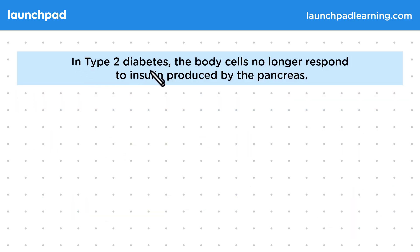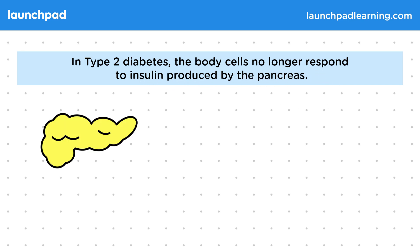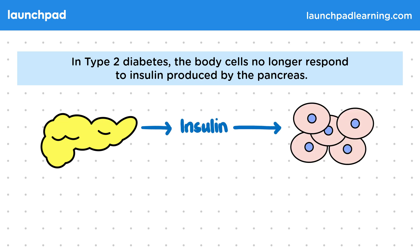In type 2 diabetes, the body cells no longer respond to insulin produced by the pancreas. Unlike type 1 diabetes, the pancreas still produces insulin, but the body cells don't respond to it.